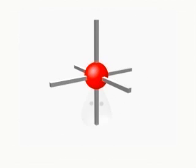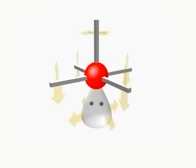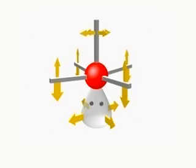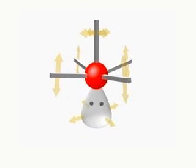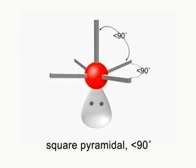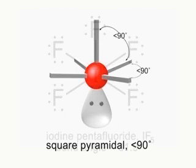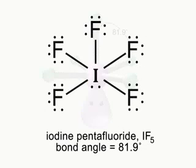Unlike the trigonal bipyramid, all positions are equivalent in an octahedron. So one lone pair can take any position to give the square pyramidal shape, with all bond angles less than 90 degrees. Iodine pentafluoride has this shape.